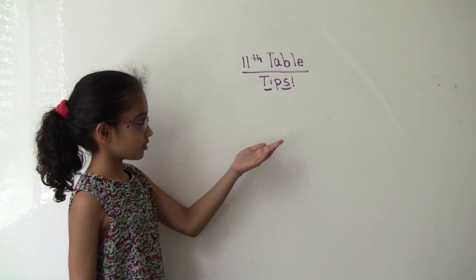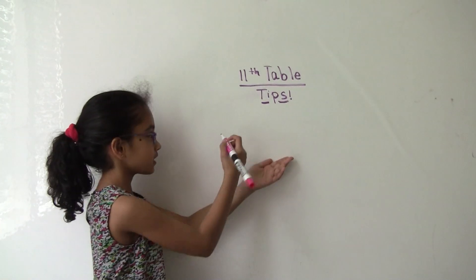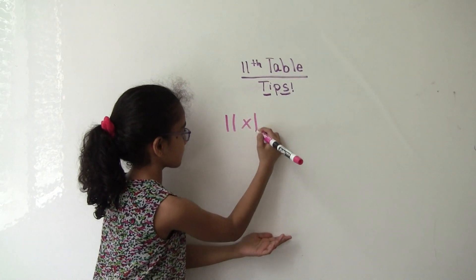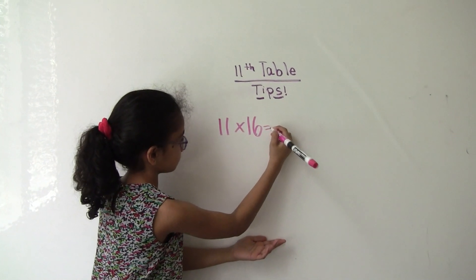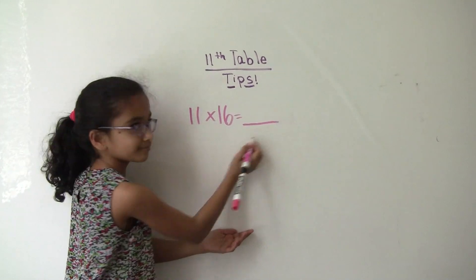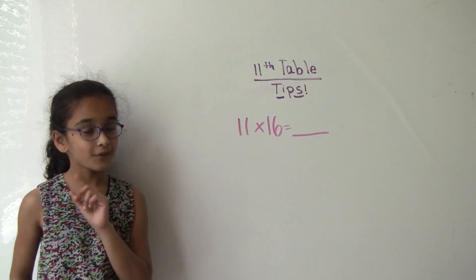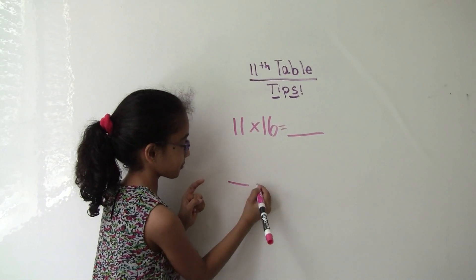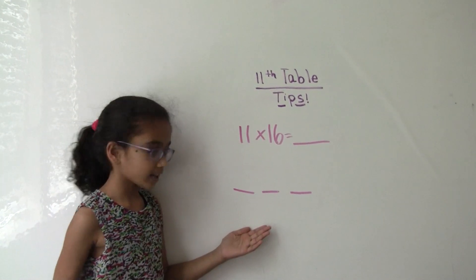First, we're going to do a little problem. Let's try 11 times 16. First step into doing this, you have to have 3 lines. Like that.